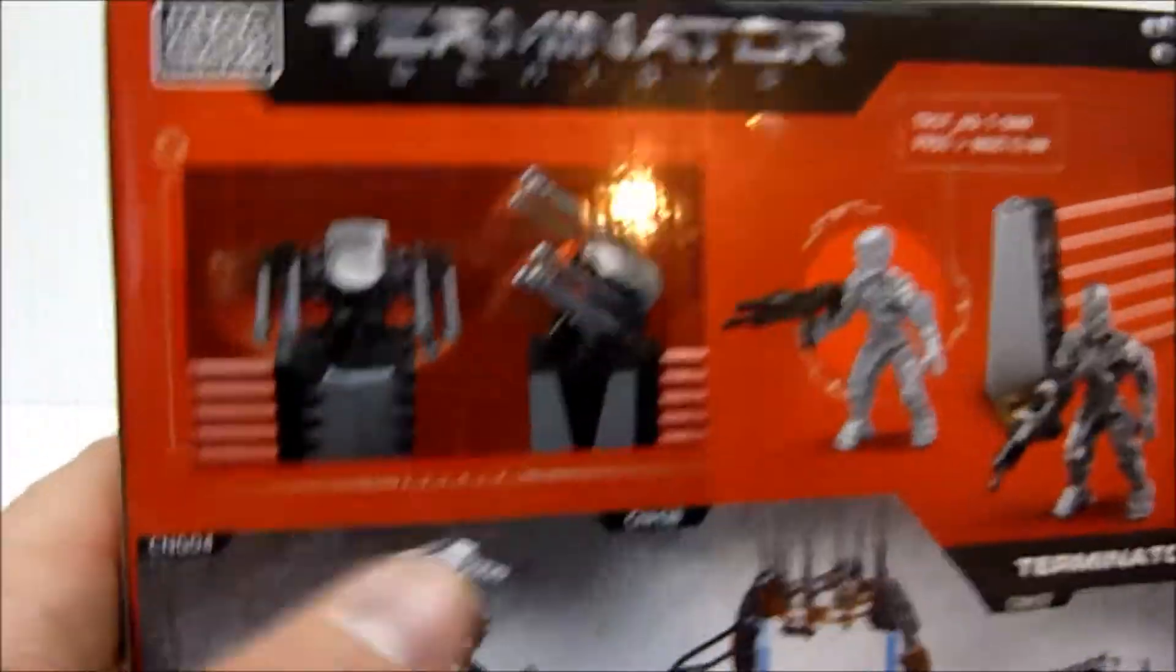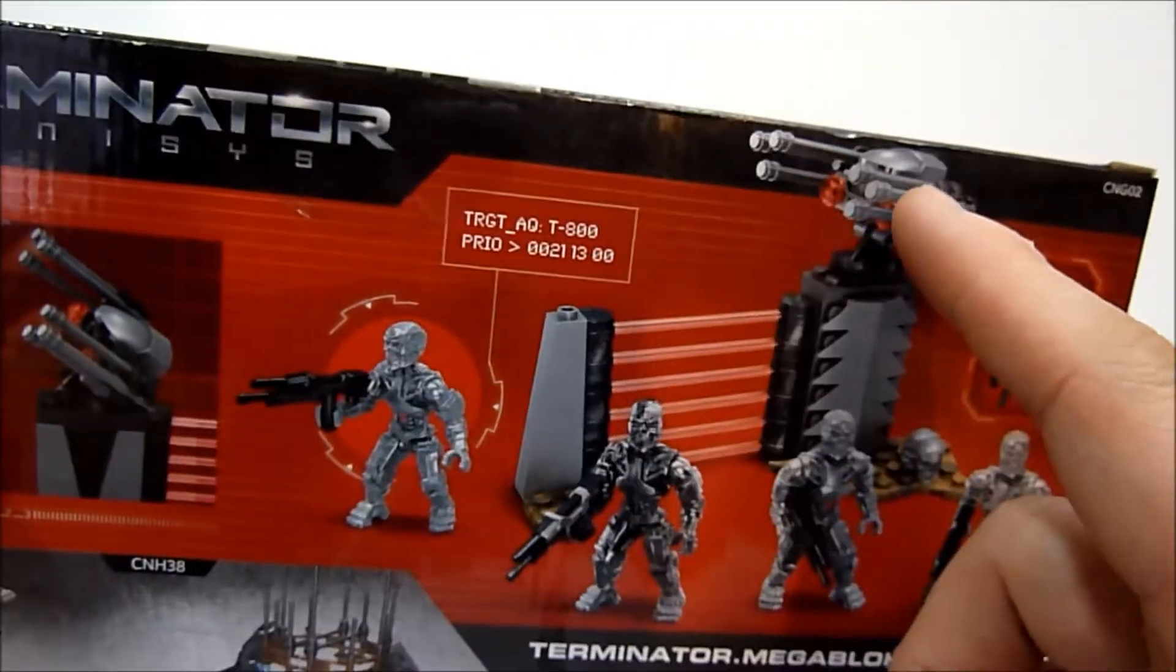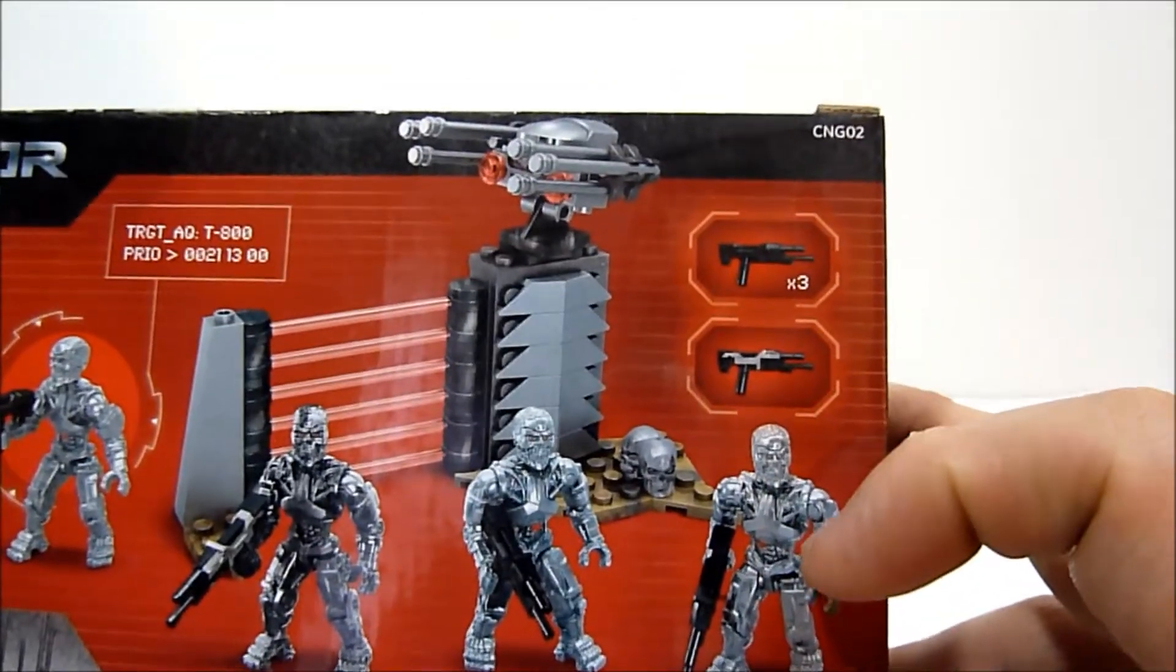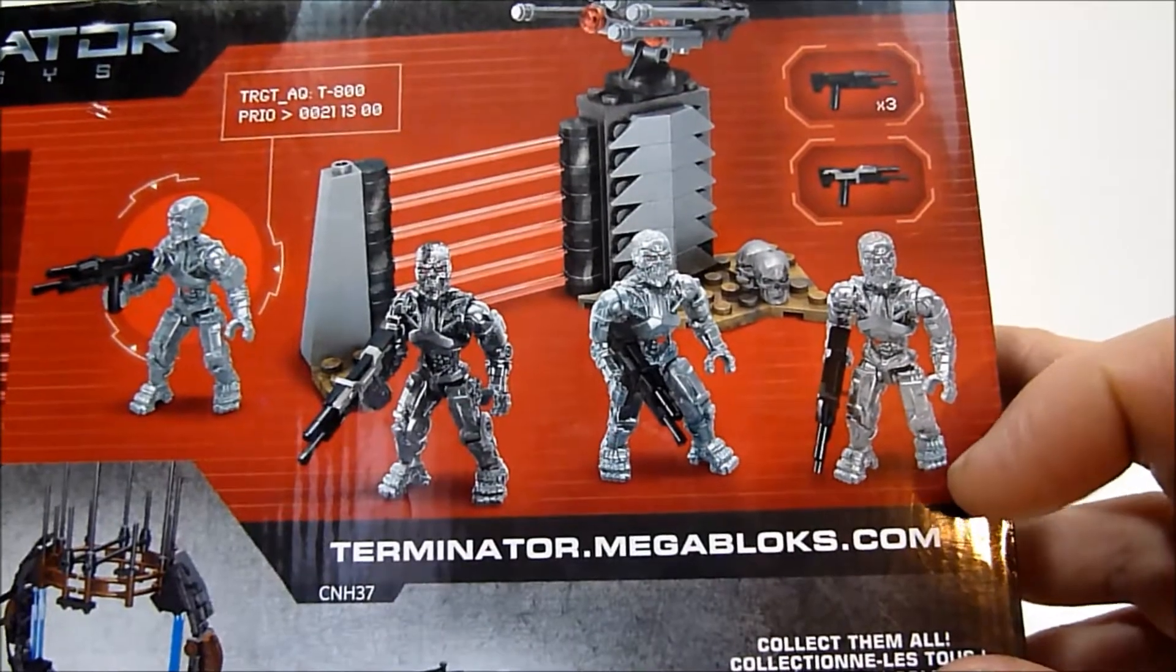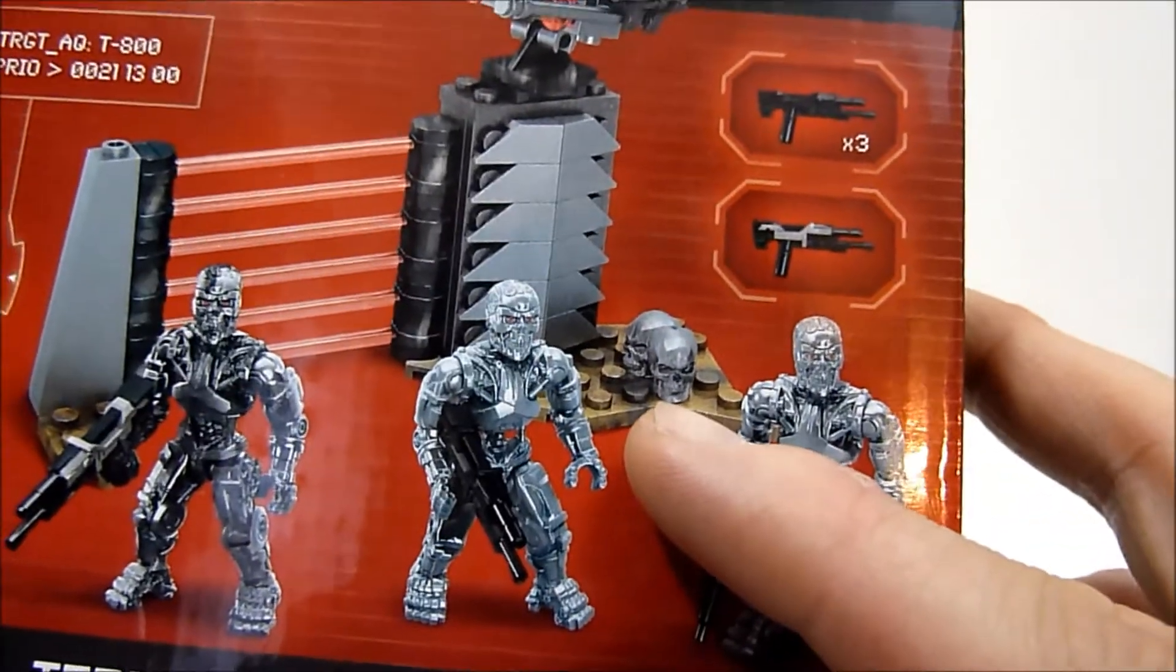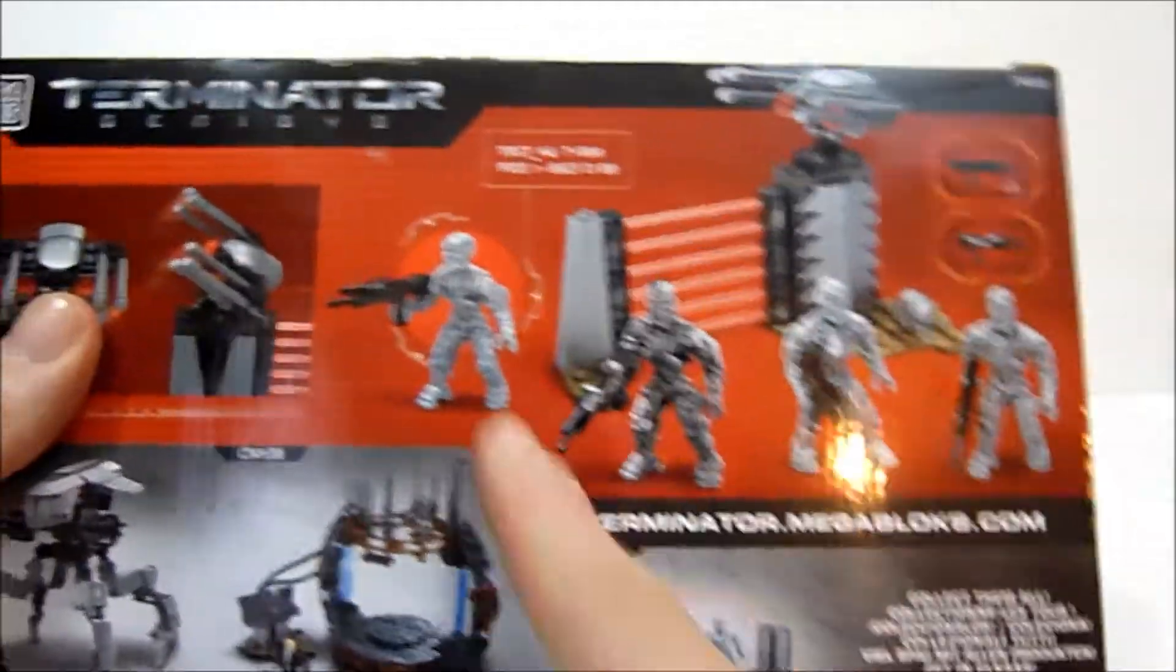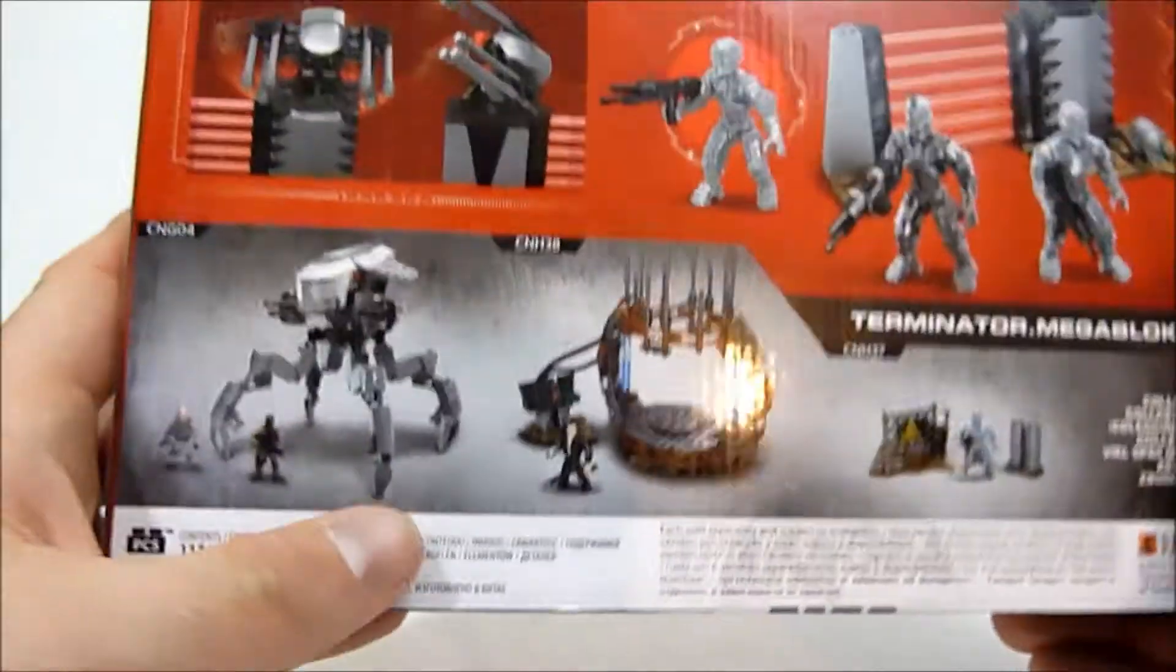You can see you also get some other action features in this set. You get a little chunk of wall and a little turret, which is fine. You get some cool weapons up here. One of them actually has some printing on it or some paint work, which is nice. Looks like maybe some skulls, which is also pretty neat.